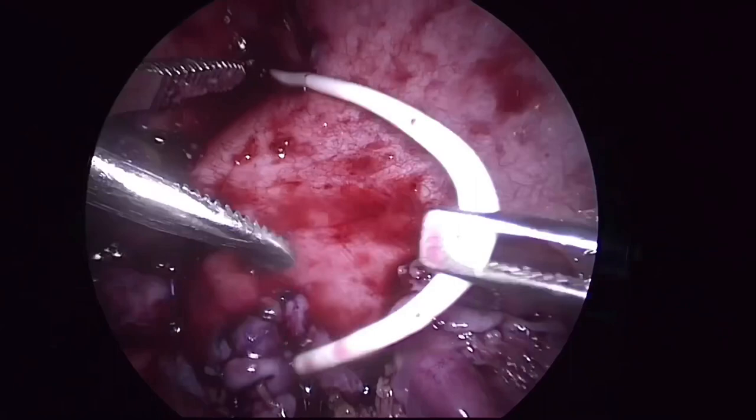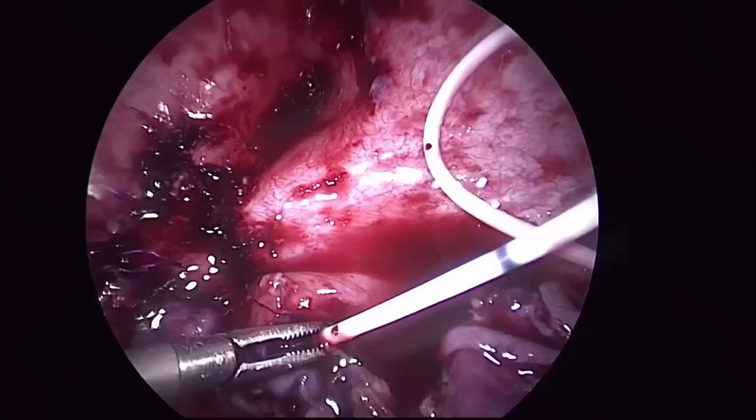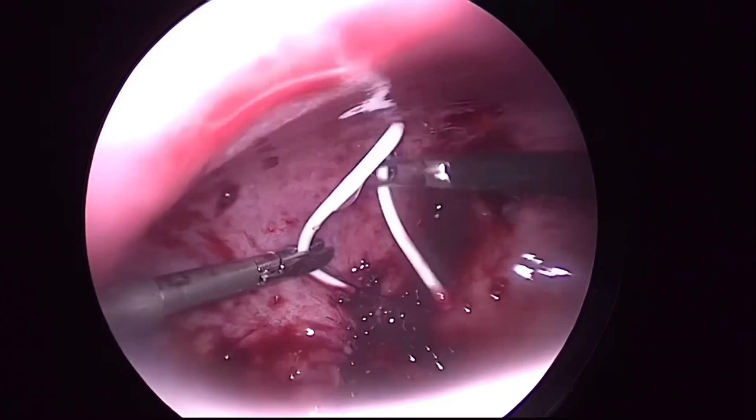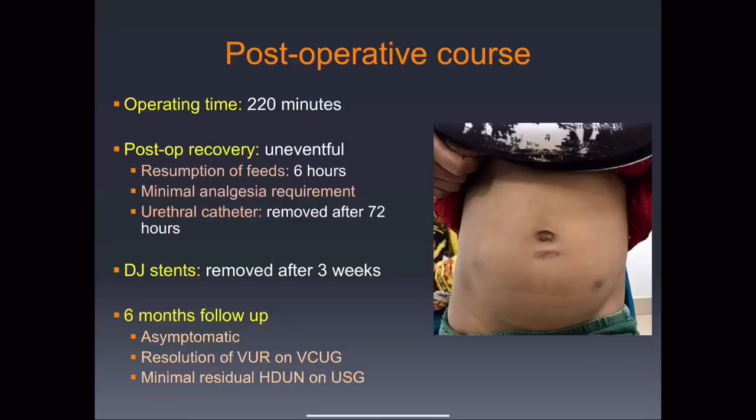DJ stents are inserted in both the right and left ureters and a thorough wash is given. This is the final reconstructive image. A Foley catheter is inserted per urethra.